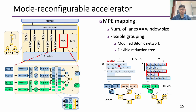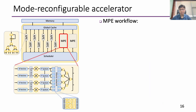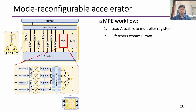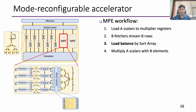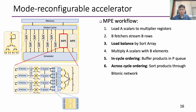This hardware reconfiguration is performed at runtime to support adaptive execution. For each lane computation, we first load the A scalar to the multiply register. Then the bit fetcher fetches the B row and passes the elements to a sort array, which helps balance the index distributions among neighboring lanes and avoids skew. The elements are then multiplied by the A scalars, passed into a priority queue which maintains order collaboratively each cycle, sorted by the bitonic network, and finally merged by the reduction tree.